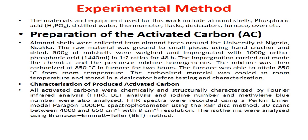Experimental methods. The materials and equipment used for this work include almond shell, phosphoric acid, distilled water, thermal metal flux, desiccators, furnace, oven, etc. Preparation of activated carbon.